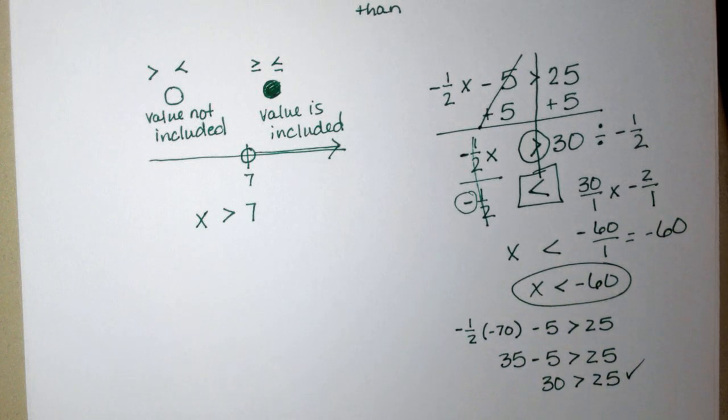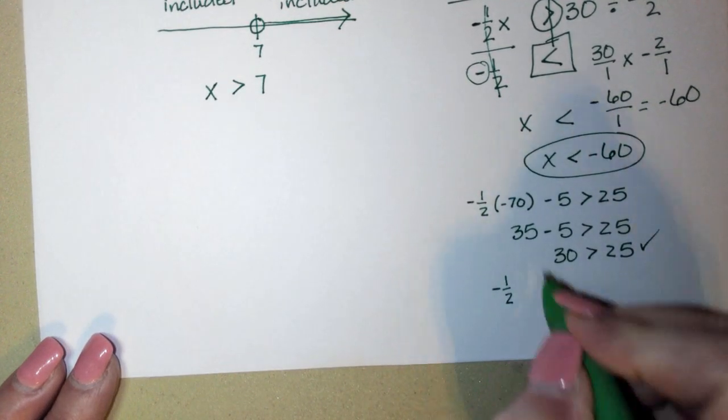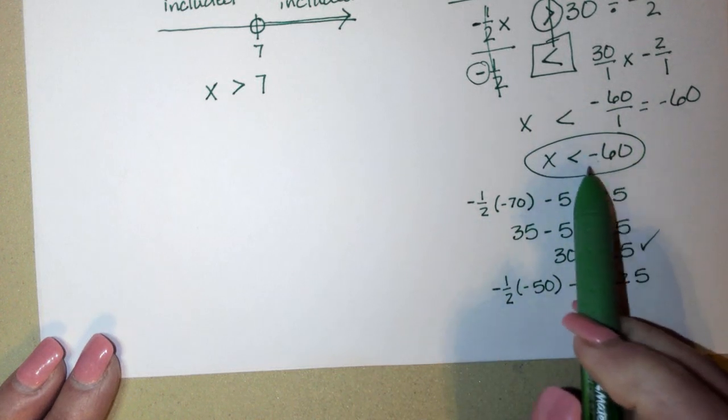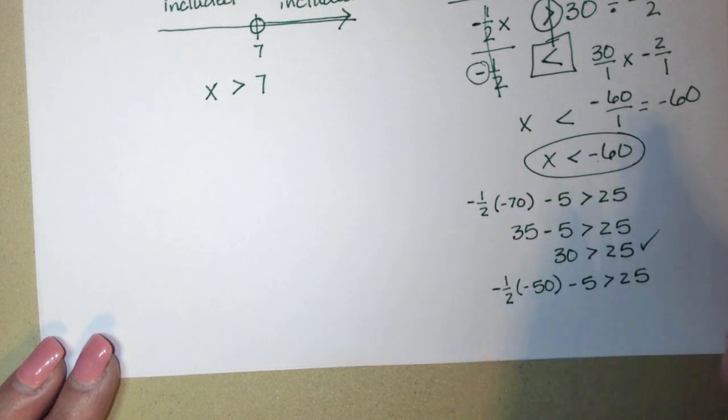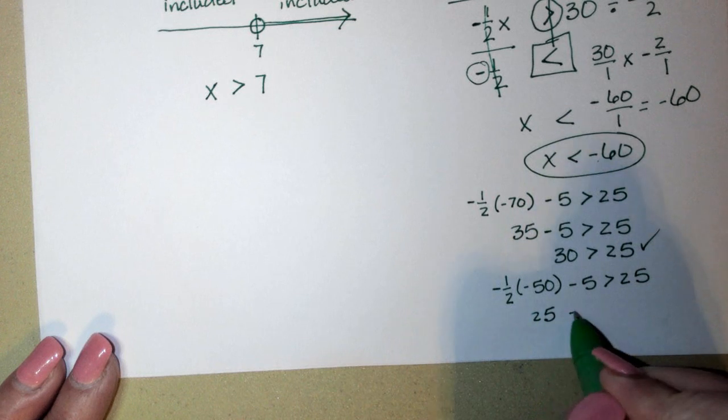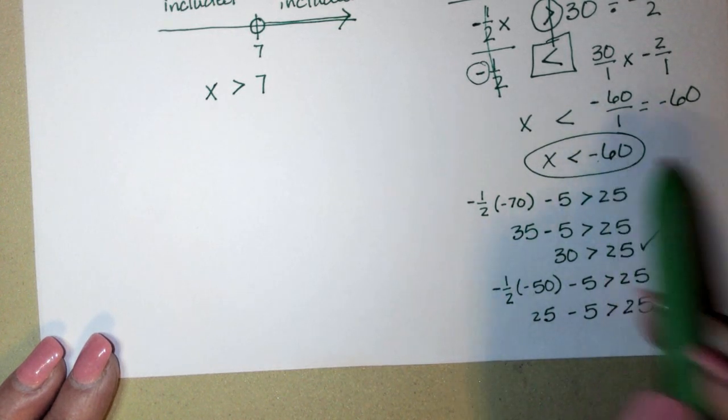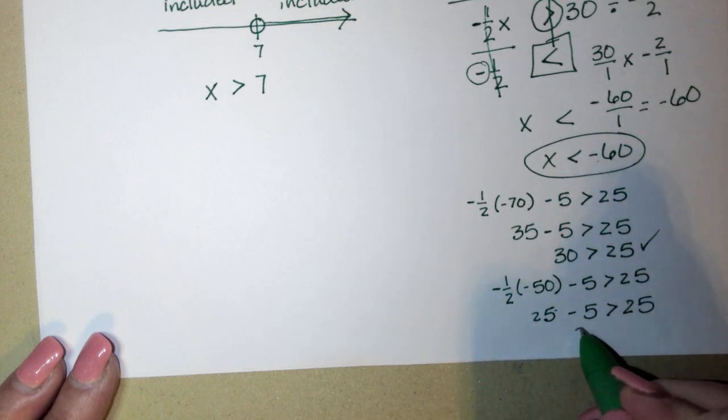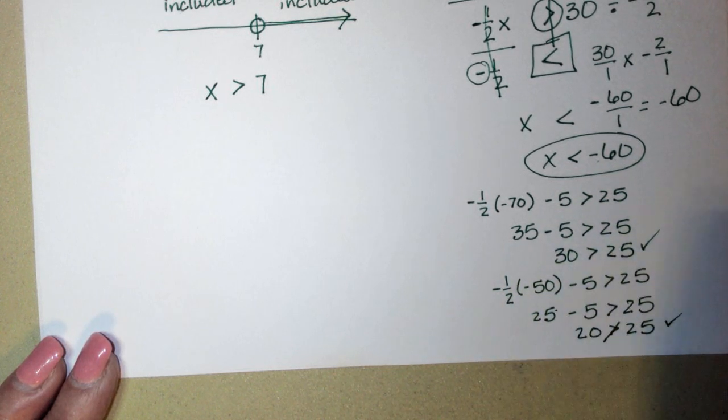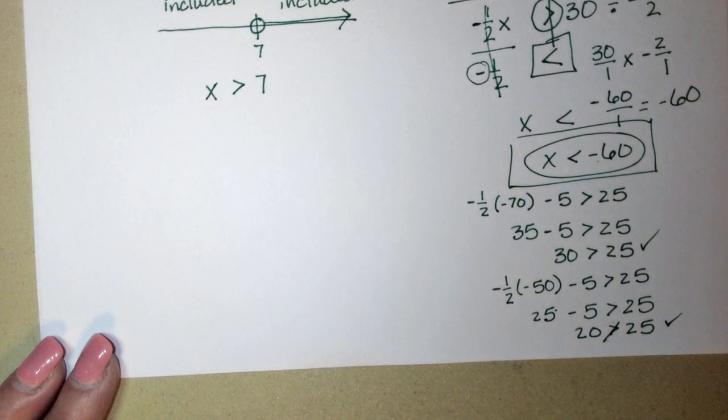Now, if I wanted to be really careful, I could choose a number that was greater than negative 60 and see if it works. So negative 50 is greater than negative 60. So I'm going to plug that in. Negative 1 half times negative 50 minus 5 is greater than 25. Now if this solution is true, I know this shouldn't work. Negative and a negative makes me a positive. Half of 50 is 25 minus 5. And if this solution is true, this should not work. 25 minus 5 is 20. And 20 is not greater than 25. So this solution appears to be true.